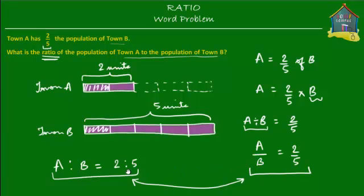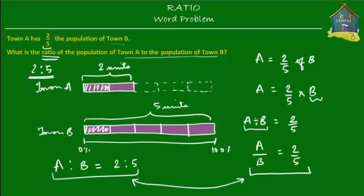Ratios are also related to percentages and decimals. For homework, take the ratio of the population of Town A to Town B and figure out what the population of Town A is equal to as a percentage of the population of Town B. If this is your percent scale and 100% represents the population of Town B, then what is the population of Town A as a percentage?